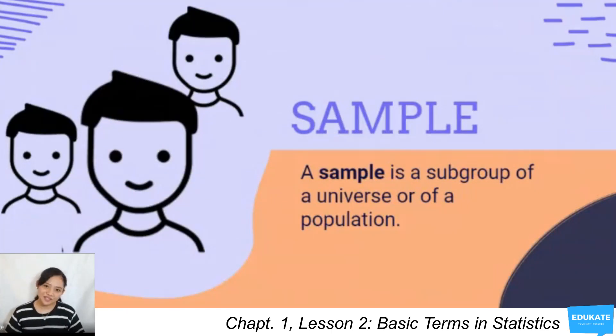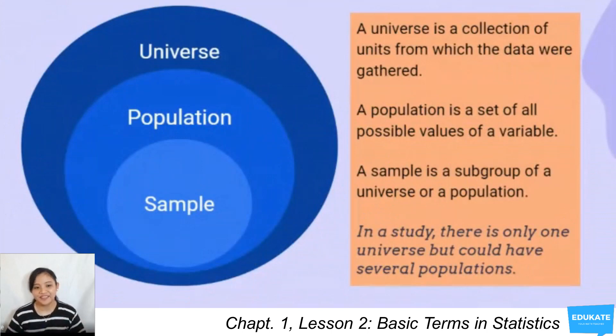To visualize this further, I have created here a mini-infographic about universe, population, and sample. So a universe is the whole collection of units from which the data were gathered. The population is under the universe, which is the set of all possible values of a variable. Next, you have the smaller one, which is the sample. It is a subgroup of a universe or of a population.